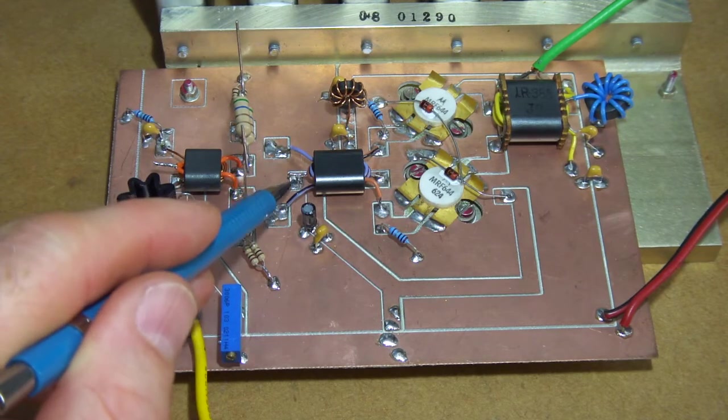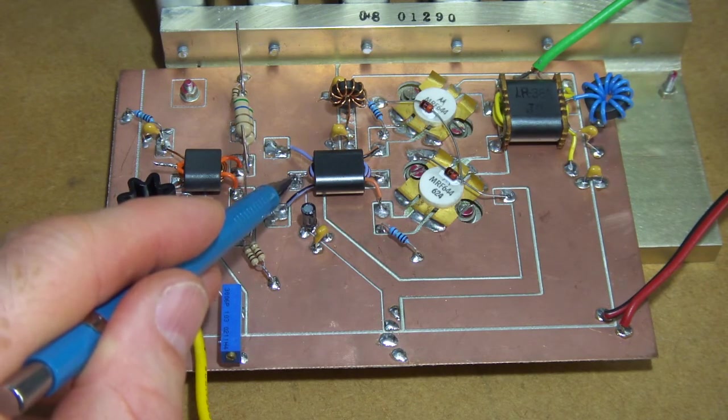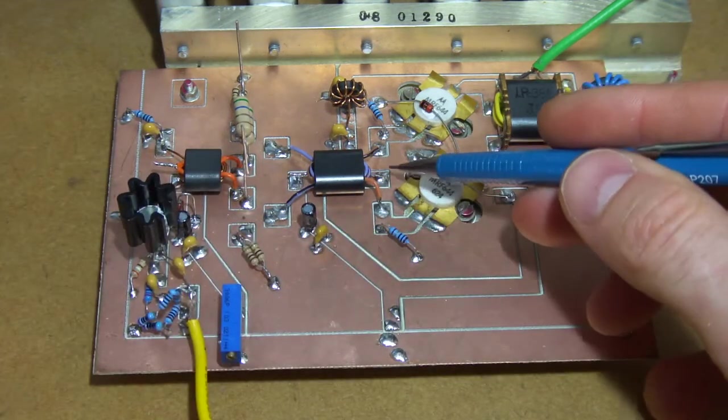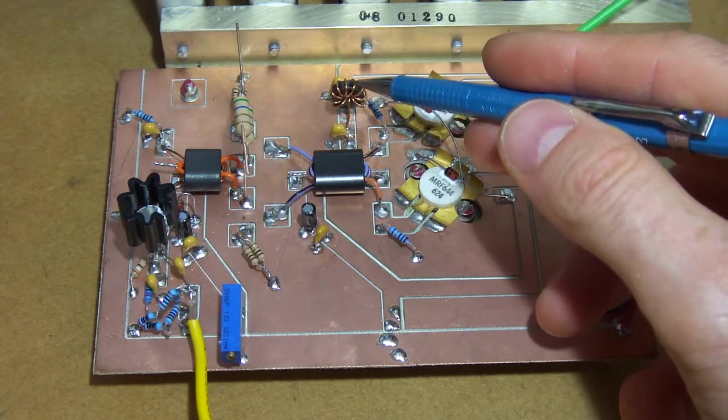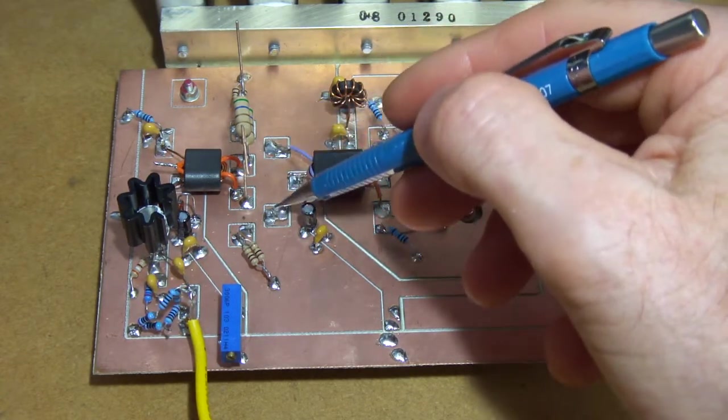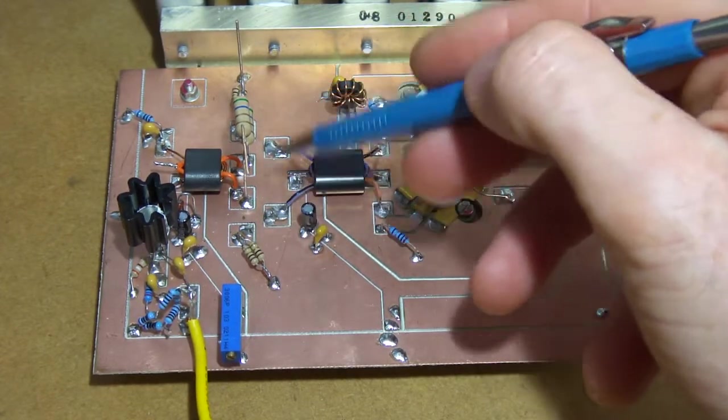And the same too for the MRF644s, same configuration there. This side is providing the bias for the two MRFs, and then this pad over here, comes from VCC through the RFC, and that's providing VCC back through to the collectors of the BD139, or the two BD139s.